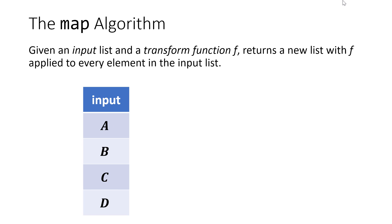Let's break this down a little more visually. Map is this idea that given an input list — and here you can imagine an input list with arbitrarily chosen values a, b, c, and d — these could be strings, numbers, or objects. Assume they're all of the same type. We're going to have a transform function f that works on a single value at a time, not on a list at a time.